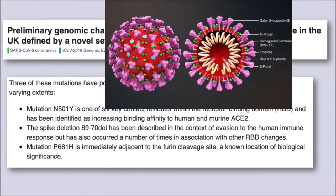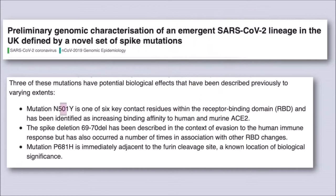This B.1.1.7 lineage has three important mutations, all on the spike protein, which are the spikes on the outside of the virus shell. The spikes are also what are used to enter human cells via the ACE2 receptor.